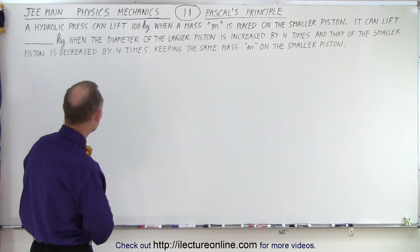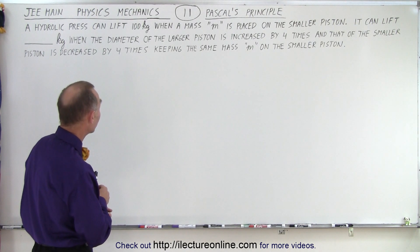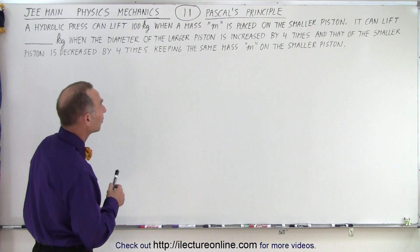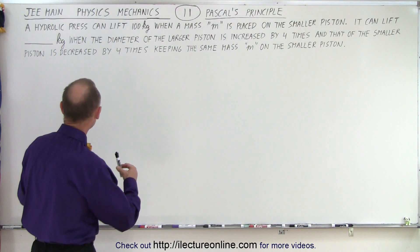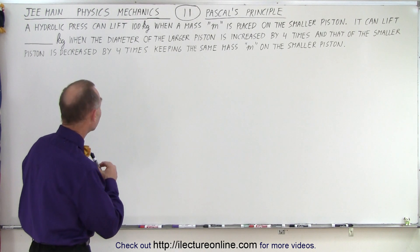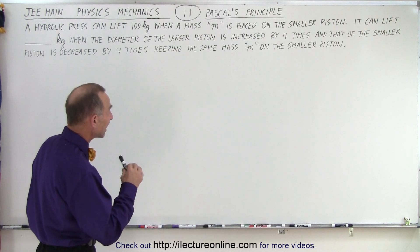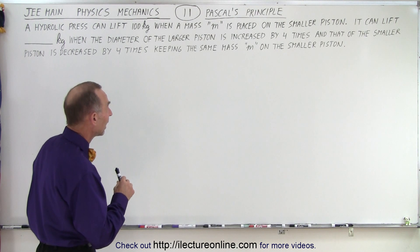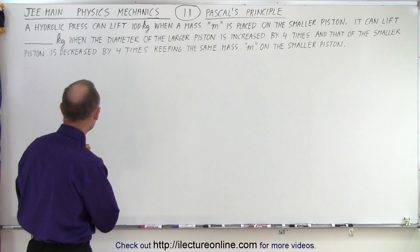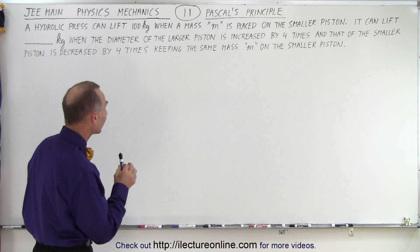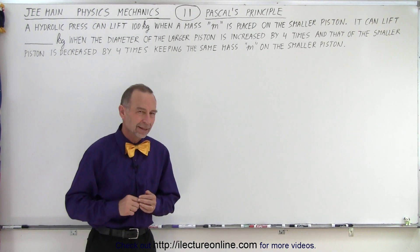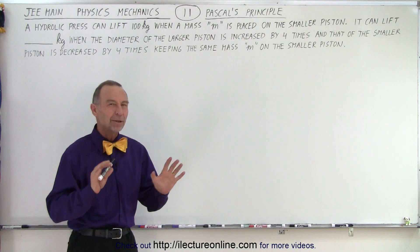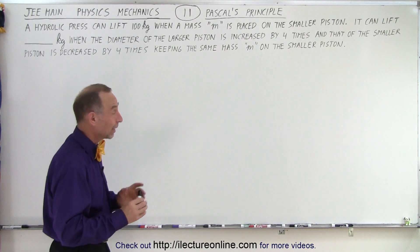A hydraulic press can lift 100 kilograms when a mass M is placed on the smaller piston. It can lift X number of kilograms when the diameter of the larger piston is increased by four times and that of the smaller piston is decreased by four times, keeping the same mass M on the smaller piston. So when you read this, it's a little bit confusing, so a diagram might help.